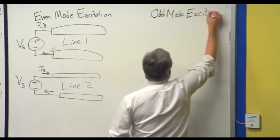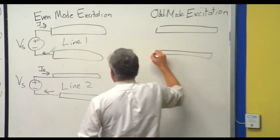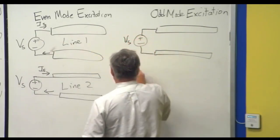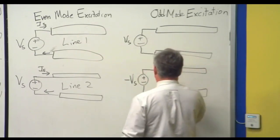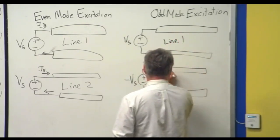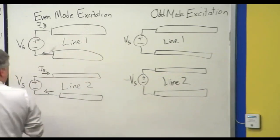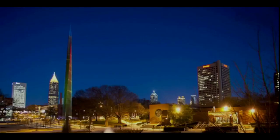Combining those two pieces of behavior allows me to study any type of excitation of the two-port system. So I put V_s on one and minus V_s on the other - this will make sense when I show you the circuit model for even and odd mode excitation. Let's go back to the document camera and put in a different equivalent circuit.